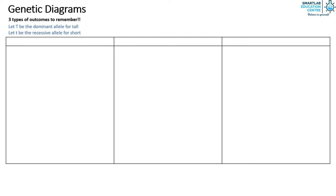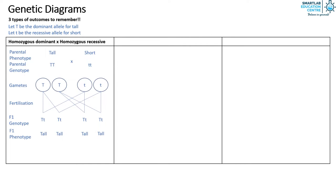In the first scenario where one parent is homozygous dominant and the other parent is homozygous recessive, the genetic diagram is as such. The phenotypic ratio of the F1 generation would all be the same and all offsprings are heterozygous.